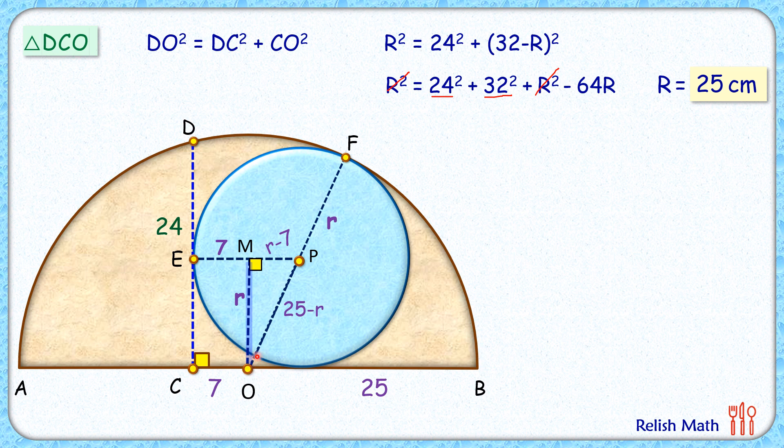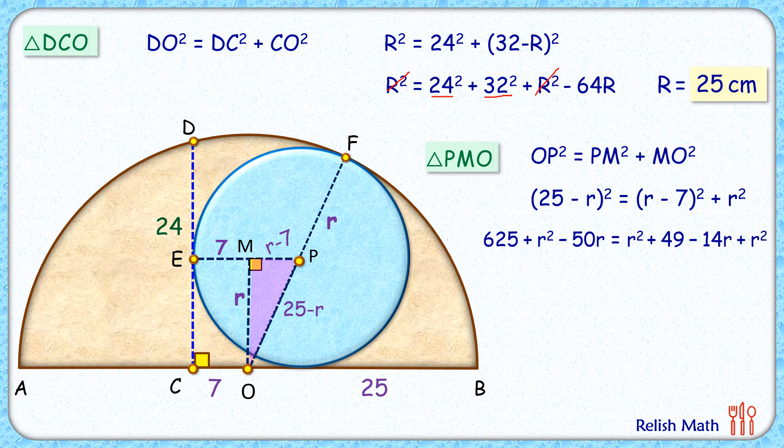Now in triangle PMO, that is this triangle, or this yellow triangle, we'll apply Pythagoras theorem. That's PO squared is PM squared plus MO squared. Putting these values here: OP as 25 minus r, PM as r minus 7, MO as r. Solving it, we'll open brackets on both sides. Now both sides, r squared will get cancelled down.